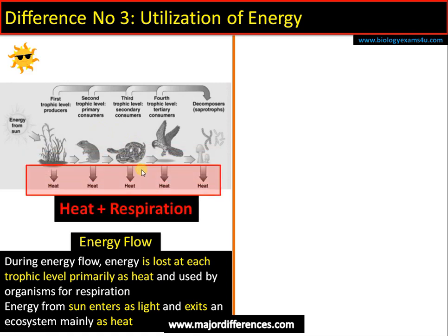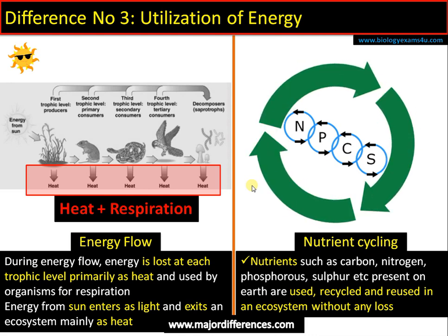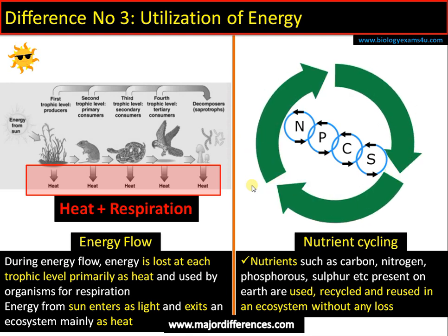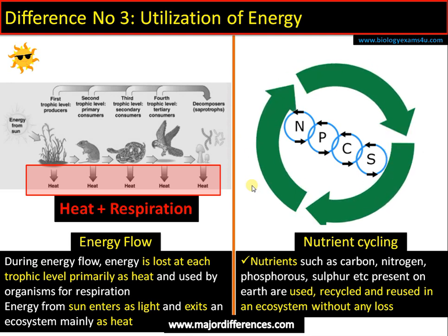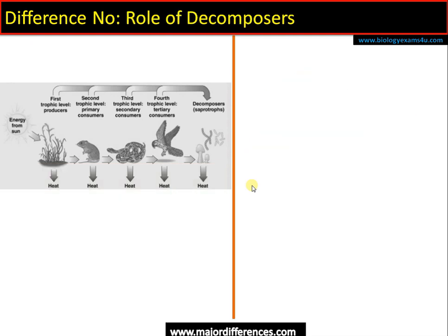Whereas in the case of nutrient cycling, nutrients like carbon, nitrogen, phosphorus, and sulfur present in the earth are used, recycled, and reused. They may be transferred from one ecosystem to another, but they remain within the earth or biosphere. That is why it is called cycling — using, reusing, and recycling in an ecosystem without any apparent loss.